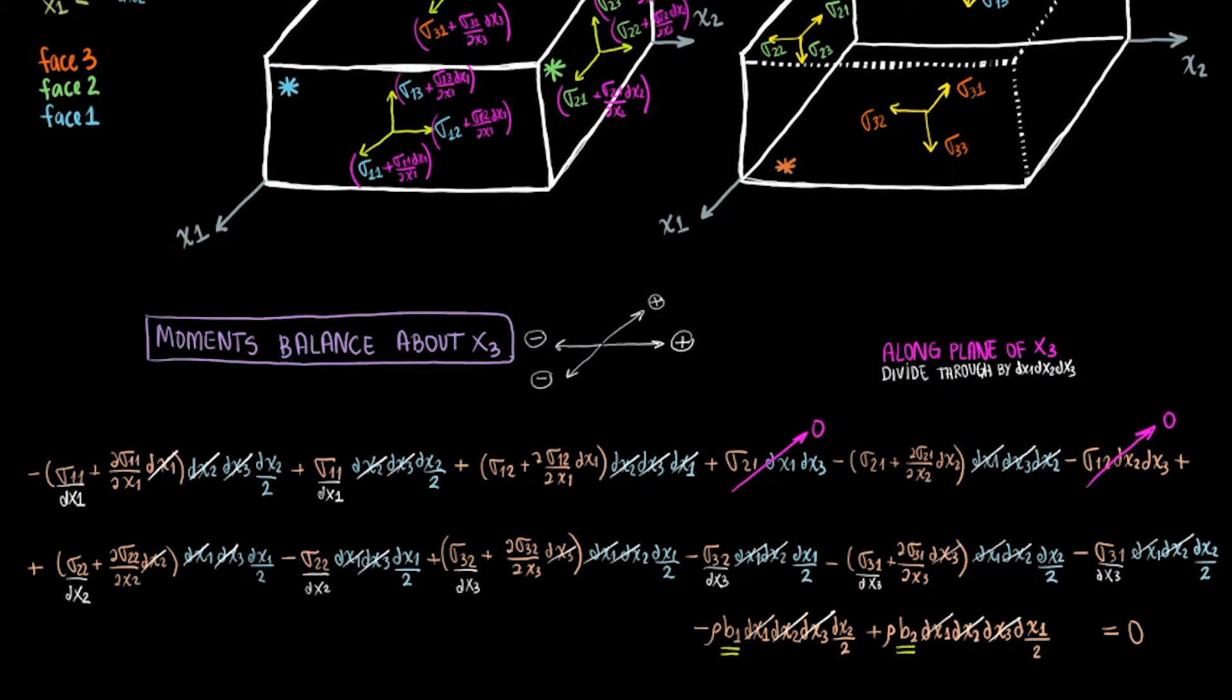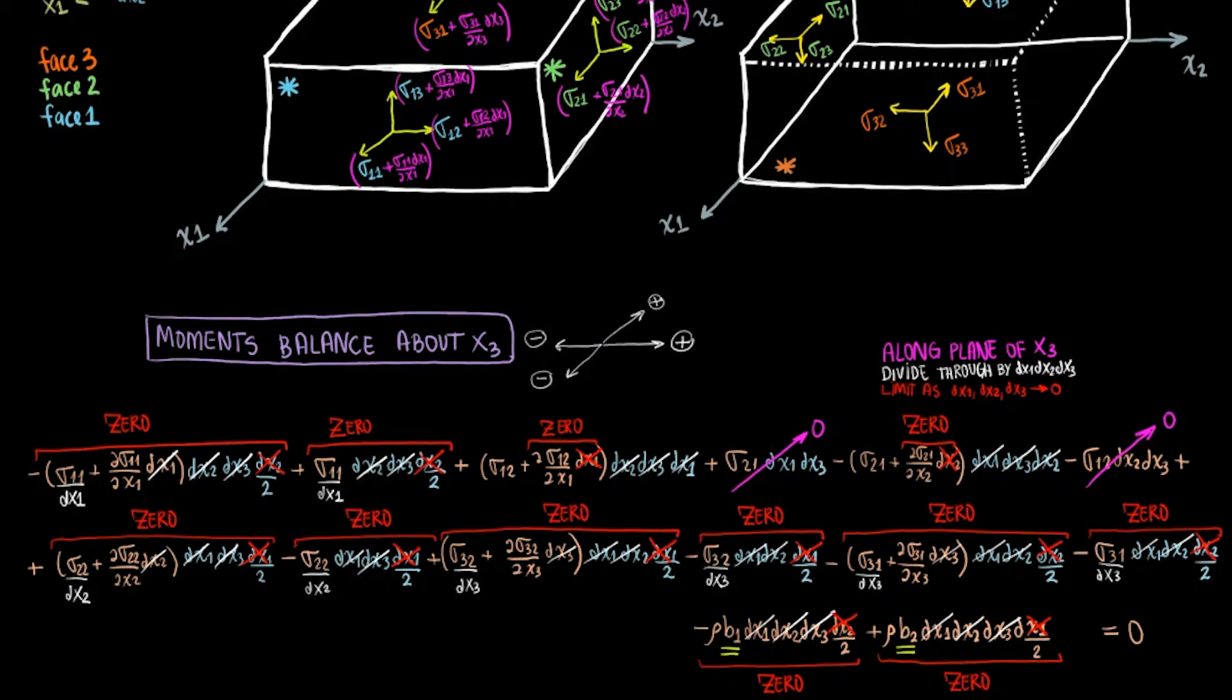To simplify this long expression, divide through by dx1, dx2, dx3, which is the volume. Then take the limit as dx1, dx2, and dx3 approach 0.